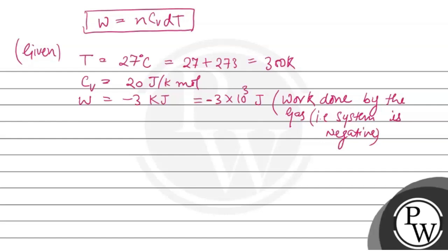Putting all the values in this formula, we will get: work done is minus 3000 joules equals 1 times... Because number of moles is 1, so n equals 1.